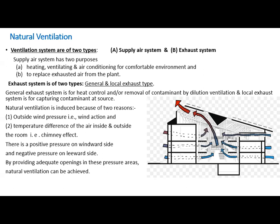There are mainly two types of ventilation: natural ventilation and mechanical ventilation. Under natural or general ventilation, there are two types: supply air systems and exhaust systems. The supply air system has two purposes — heating, ventilating, and air conditioning for a comfortable environment, and replacing exhausted air from the plant. The exhaust system has two types: general and local exhaust. In the general exhaust system, contaminants are controlled by dilution or ventilation; local exhaust systems can also be used.